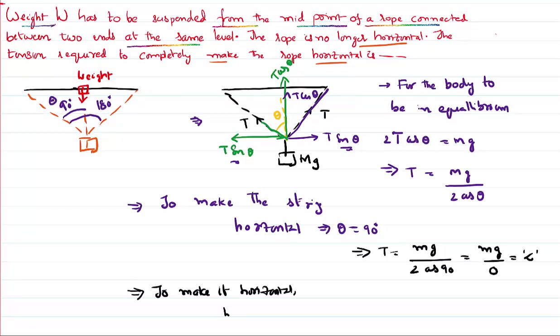But I cannot get an infinite tension. Impossible to give infinite values. Means what? It simply tells you that it's not possible to make this string horizontal. We can't make it horizontal. If you want to make it horizontal, simply think that what I need to do is remove the mass. Otherwise, we cannot make it horizontal in any way.